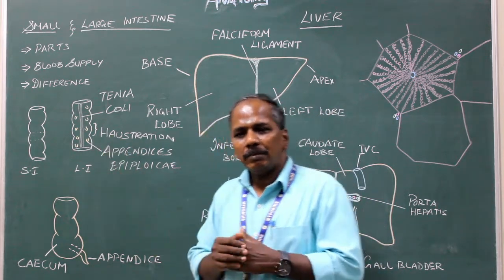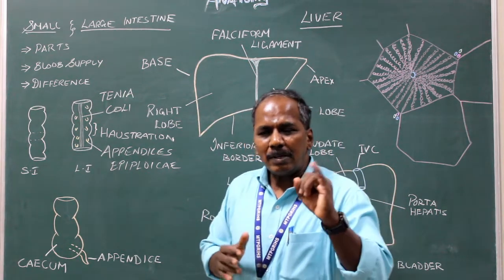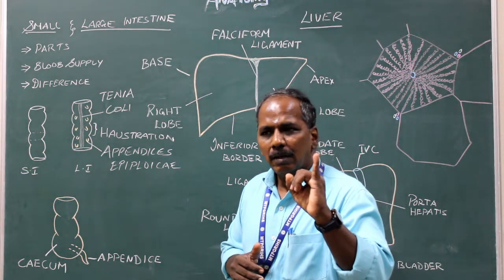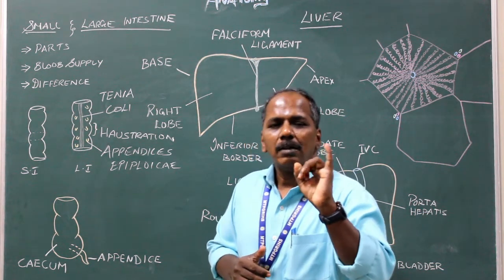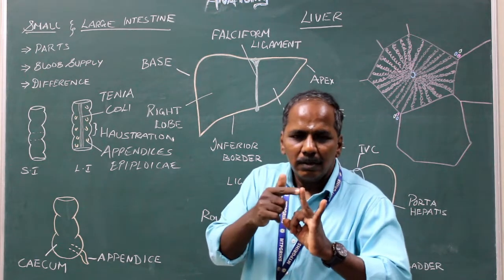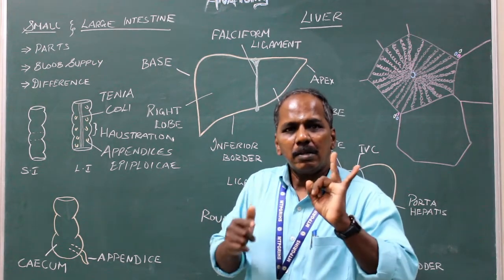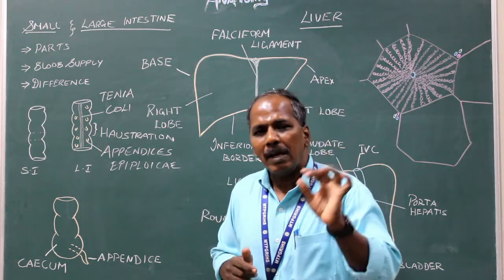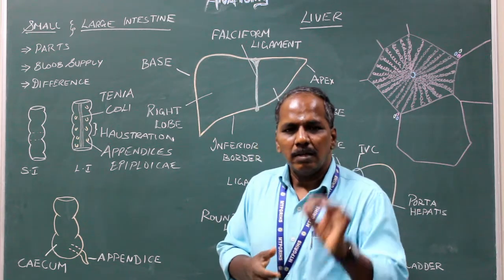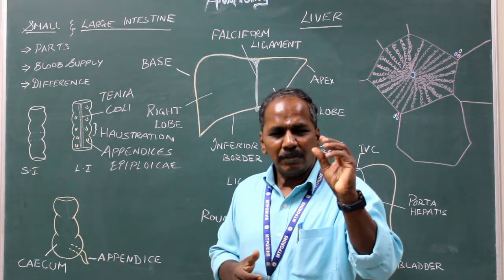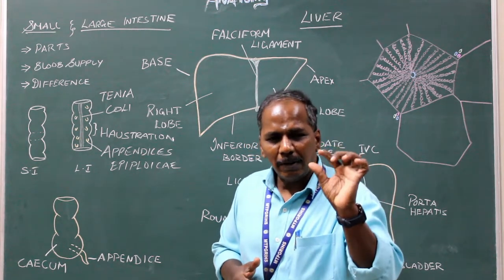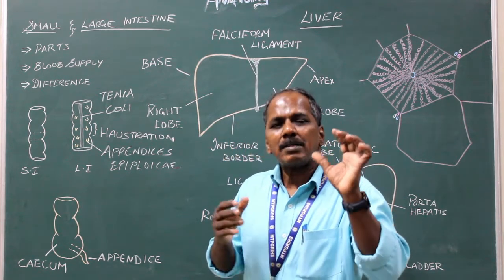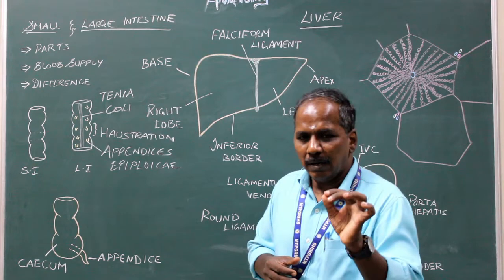Jejunum and ileum. Presence of Brunner's glands in the duodenum is one of its characteristic features. Presence of villi in larger amount and Peyer's patches in scanty amount is the characteristic feature of the jejunum. Whereas presence of villi in less amount and Peyer's patches in numerous amount is the characteristic feature of the ileum.